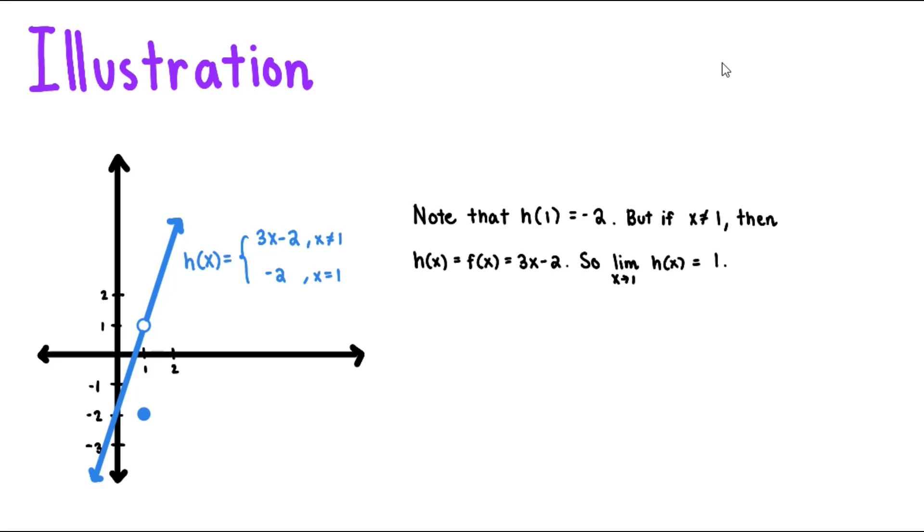Now, what do we observe here? Observe that h of 1 is equal to negative 2, but the limit of h of x as x approaches 1 is equal to 1. These two are not equal.